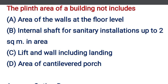The plinth area of the building does not include — option A: area of the wall at the floor level, option B: internal shaft for stationary installation up to 2 m in area, option C: lift underwall including landing, option D: area of the cantilever porch. The correct answer is option D, area of the cantilever porch.